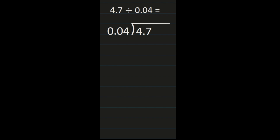For our third example we have 4 and 7 tenths divided by 4 hundredths. The 4 and 7 tenths goes on the inside; 4 hundredths on the outside. I'm going to move the decimal two places to the right in the divisor to get a whole number, and two places to the right in the dividend as well. I only have one place with the 7, so I have to add a 0. Once I've added the 0 I can place the decimal at the end. Rewriting, we have 470 divided by 4.